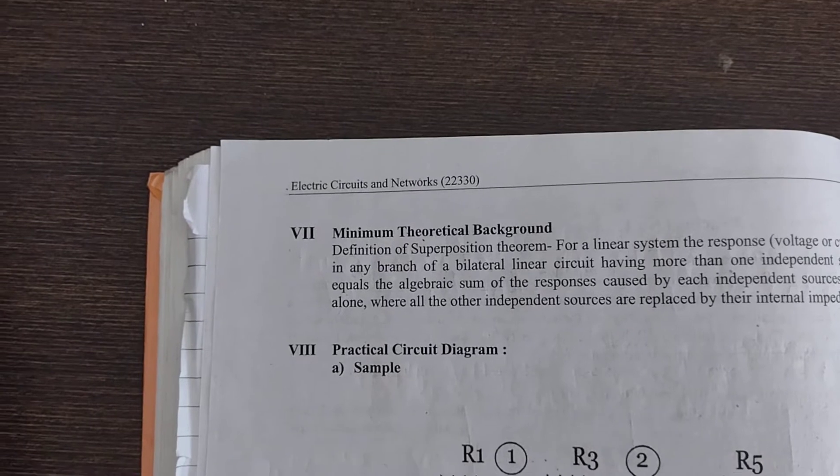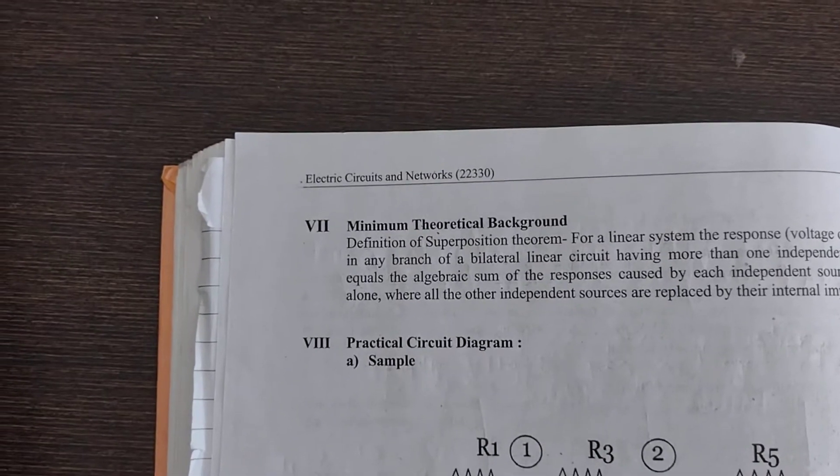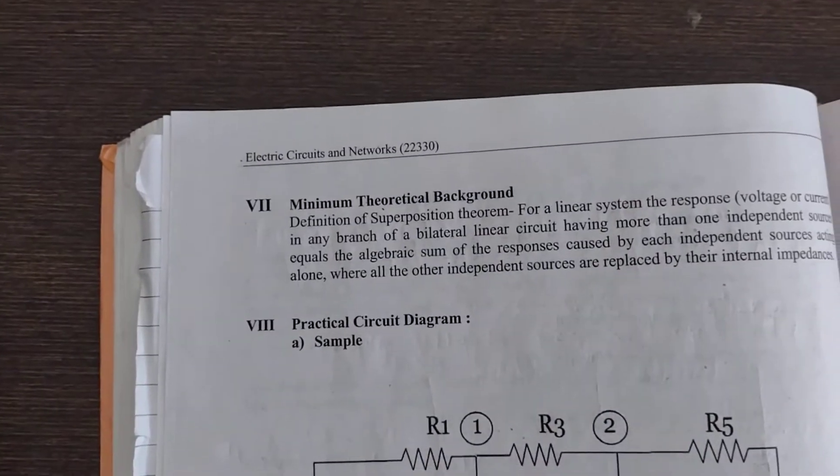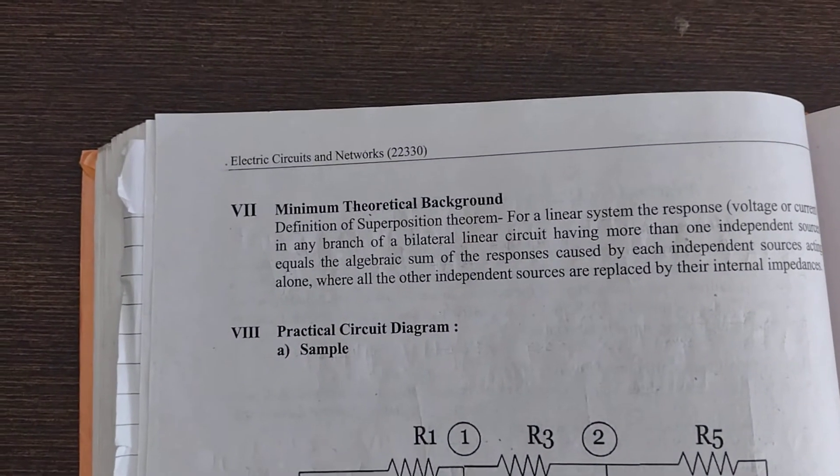when we connect the V2 source, current flows through it. This equals the total current. This is the Superposition Theorem statement.